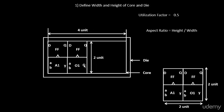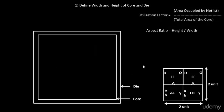So these are the terms — aspect ratio and utilization factor — that you'll encounter while building a chip or doing floor planning, and this is what they actually mean and how they are derived. In the next video, we'll take an example of a bigger chip, place the logic inside, and calculate the utilization factor and aspect ratio. Thank you.